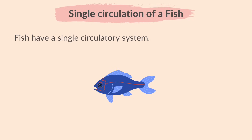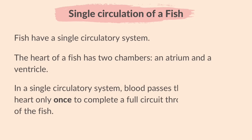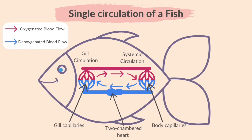Fish have a single circulatory system. The heart of a fish has two chambers: an atrium and a ventricle. In a single circulatory system, blood passes through the heart only once to complete a full circuit through the body of the fish. This diagram illustrates the single circulation of a fish.